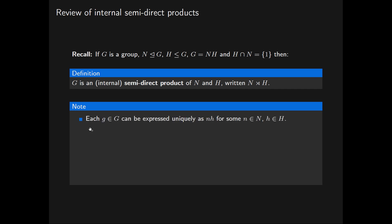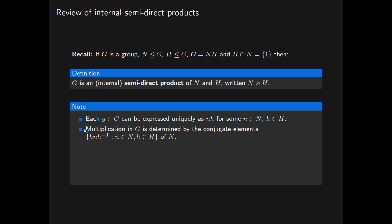In this situation, every element of our group G has a unique expression as nh for some element n in the subgroup N and some element h in the subgroup H. Provided we know how group multiplication works in the subgroups N and H, multiplication in G is determined by the conjugate elements h·n·h-inverse for elements n in N and h in H. These will all lie in the subgroup N because N is a normal subgroup of G.